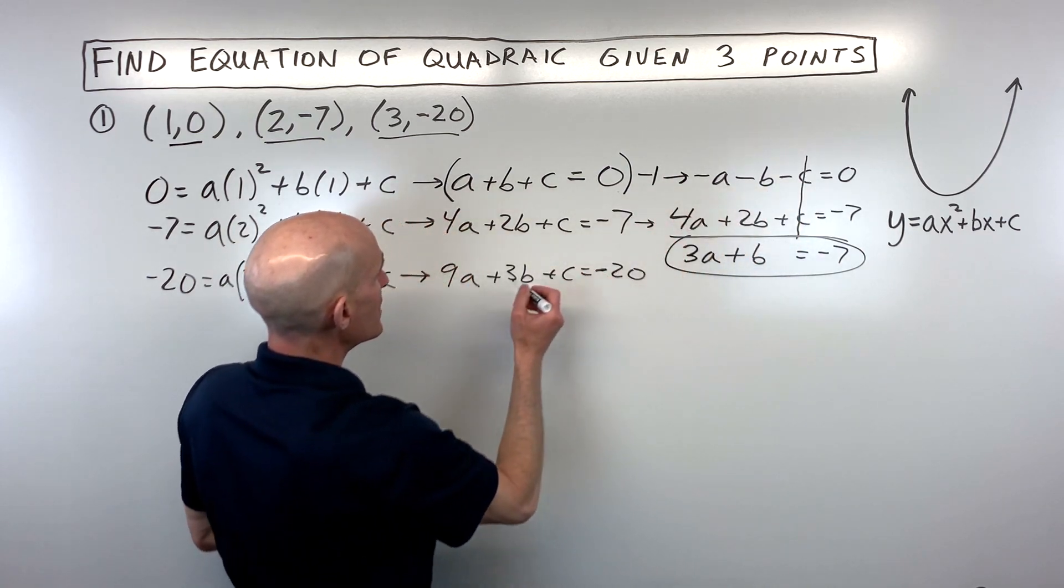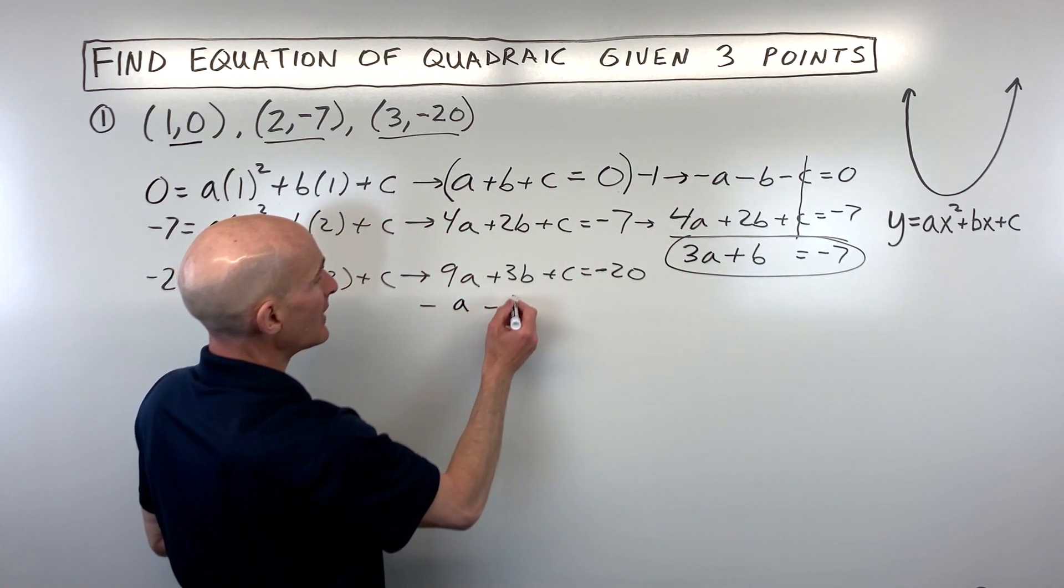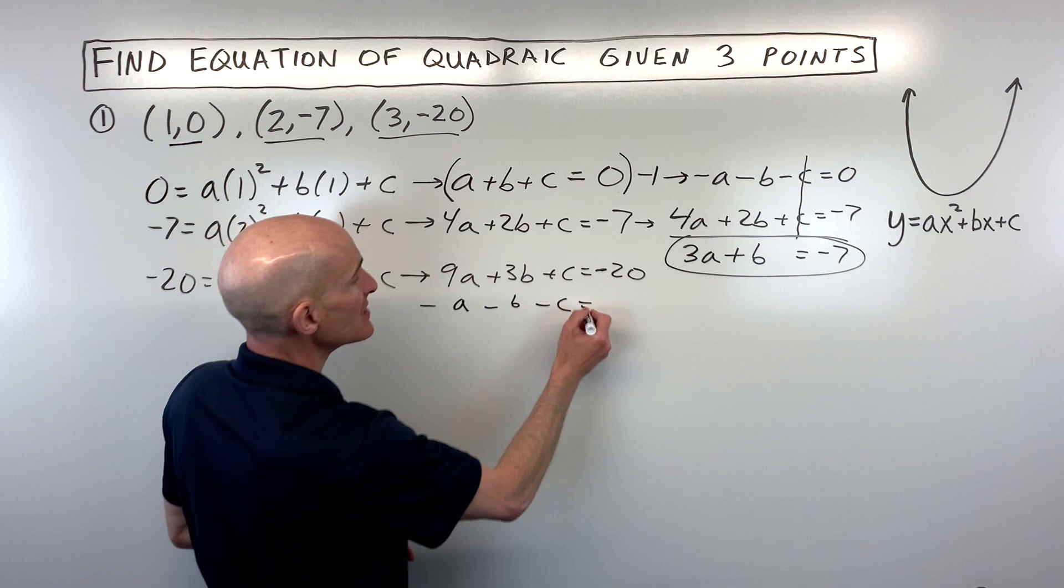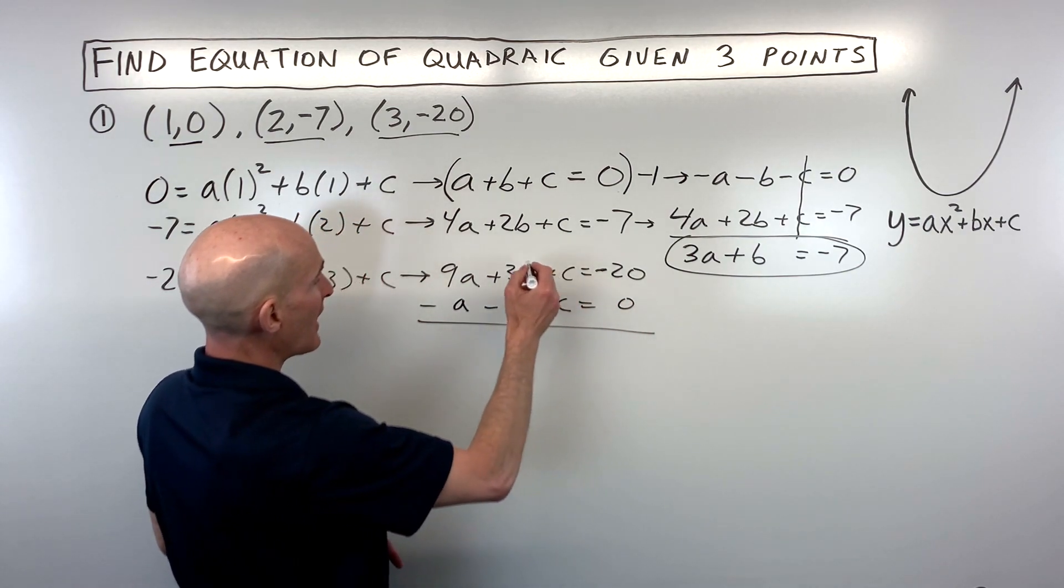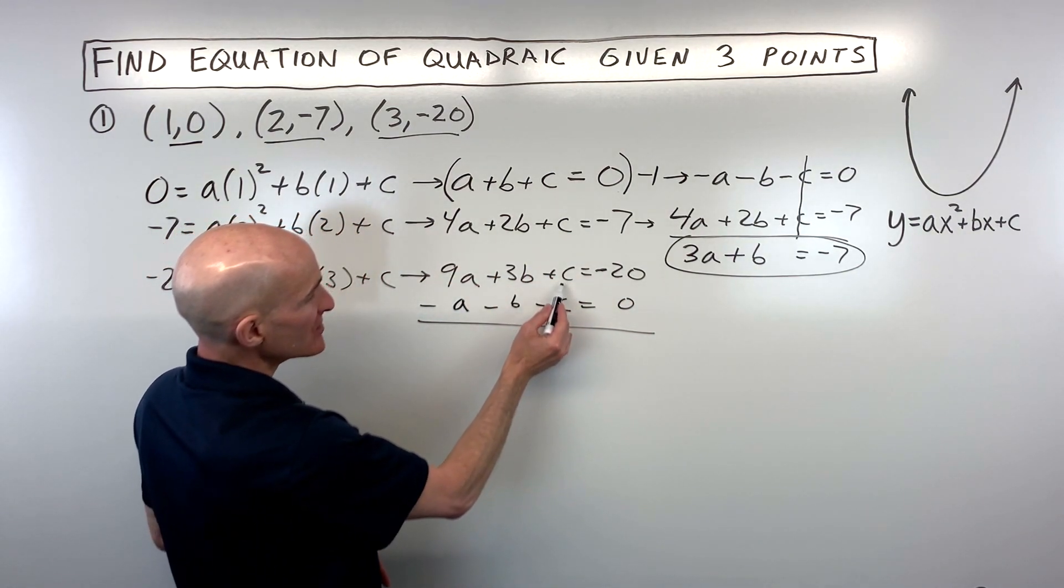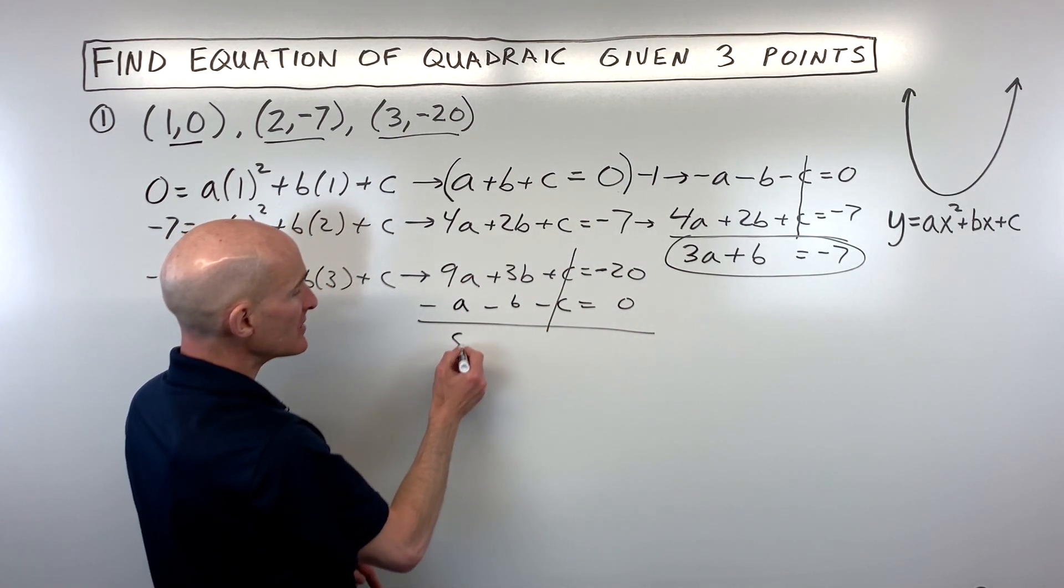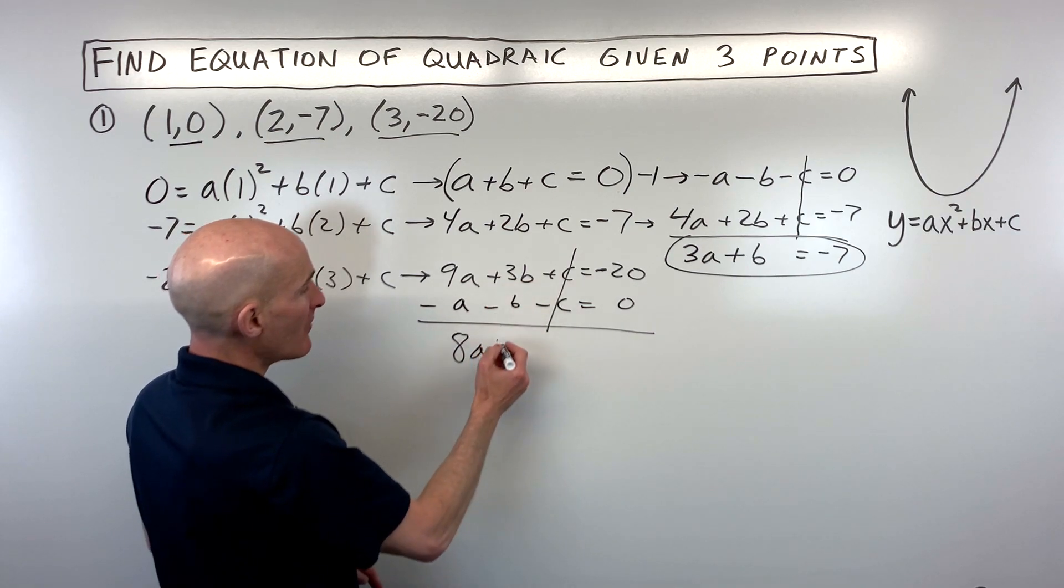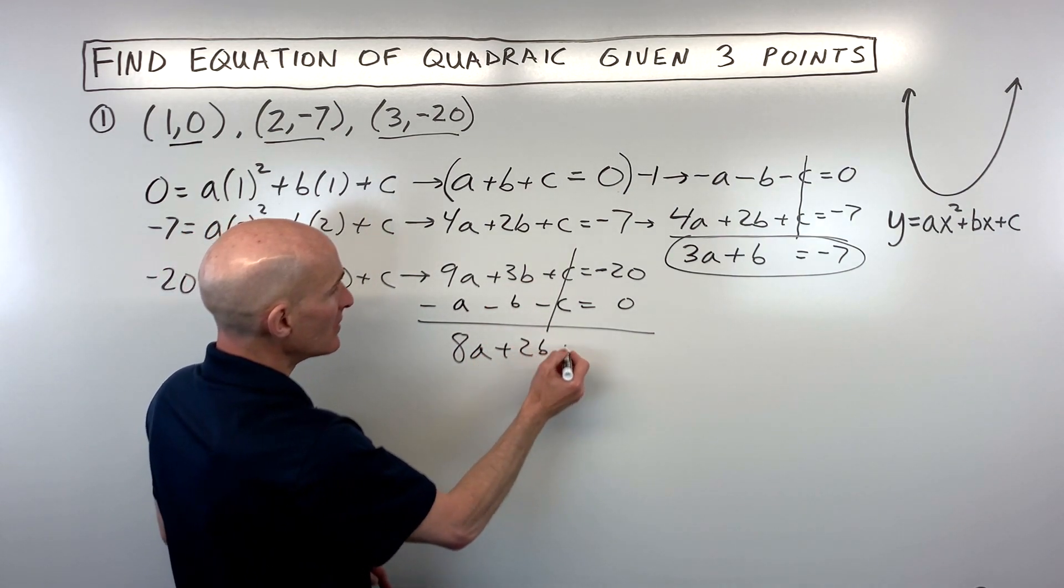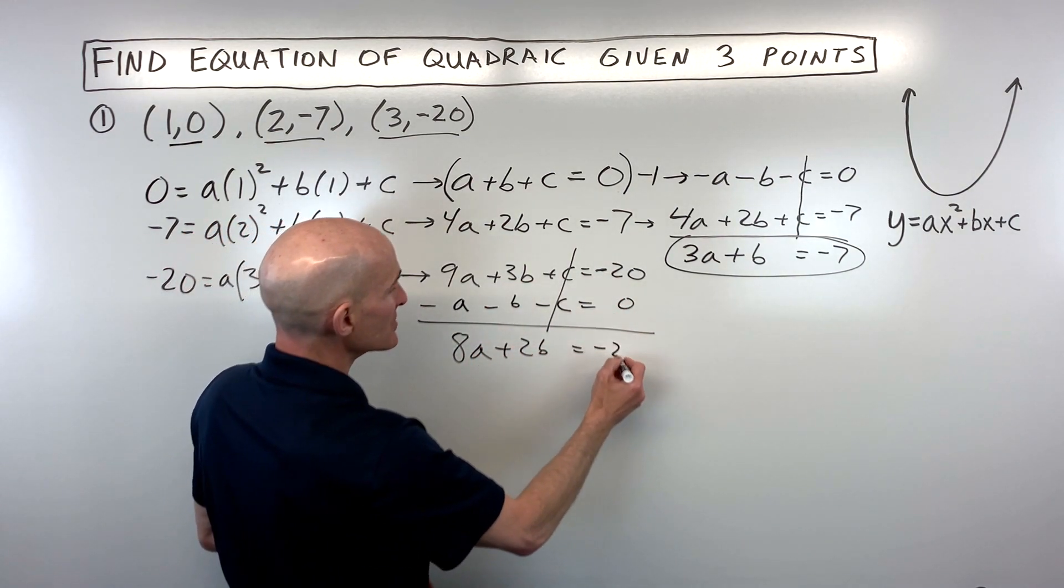So what I'm going to do is I'm going to take this equation here, I'm going to bring it down, negative a minus b minus c is equal to zero, and I'm going to add these two equations together and you can see the c and the negative c cancel one another out. 9a minus 1a is 8a, 3b minus b is 2b, and negative 20 plus zero is negative 20.